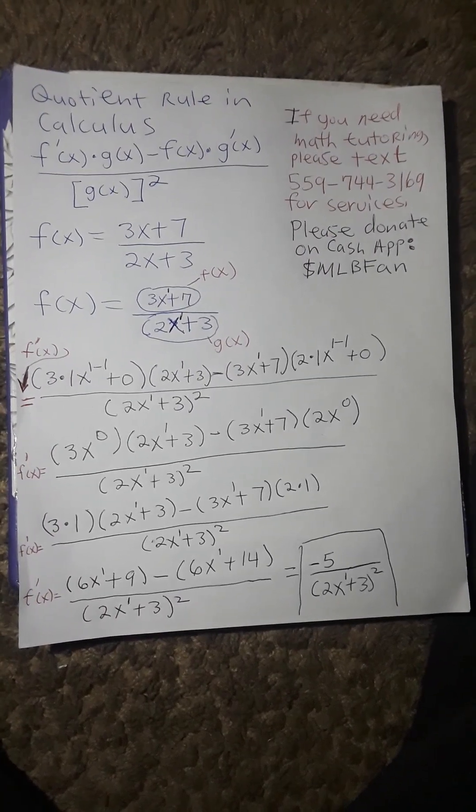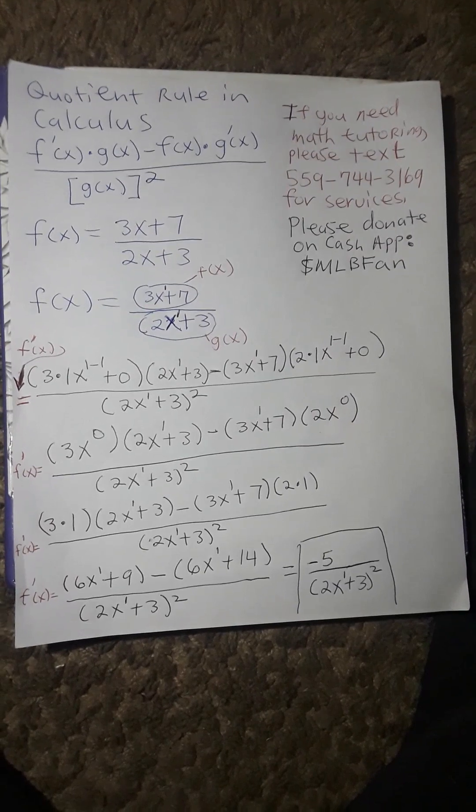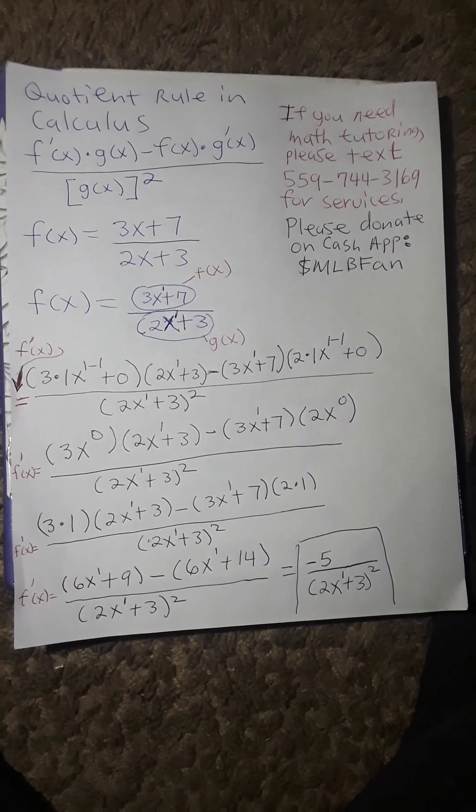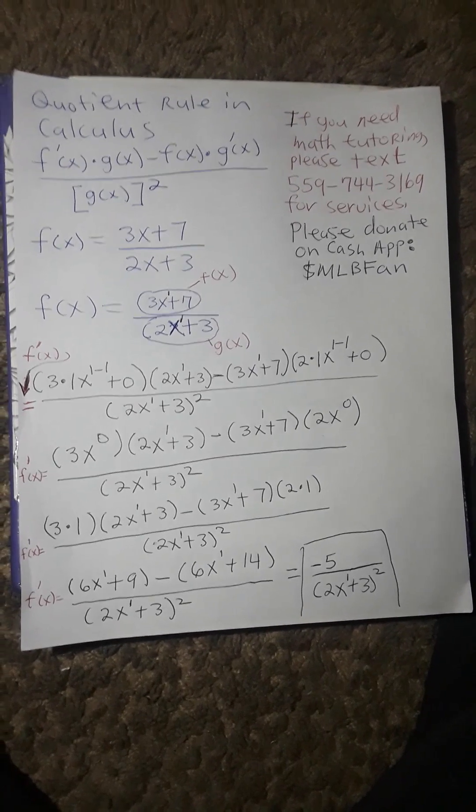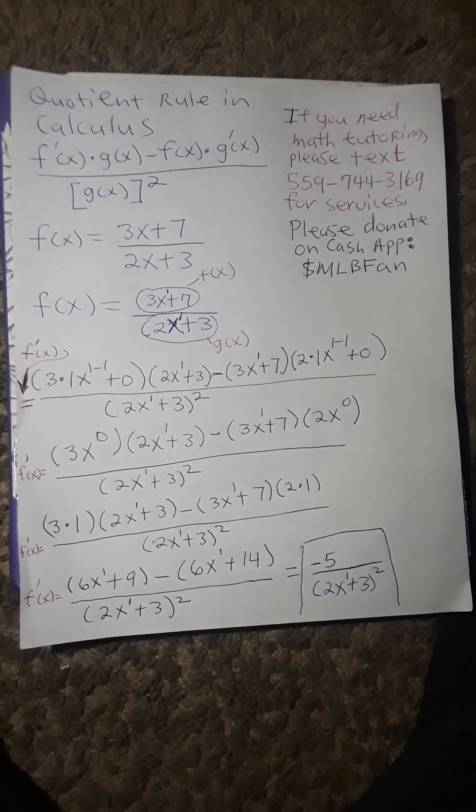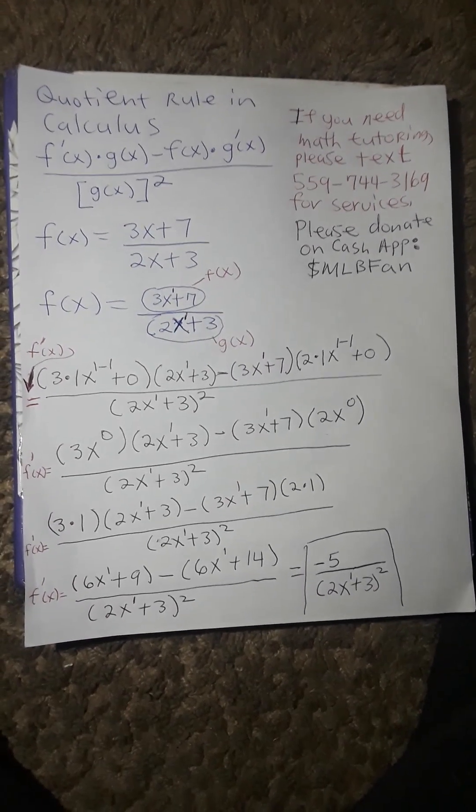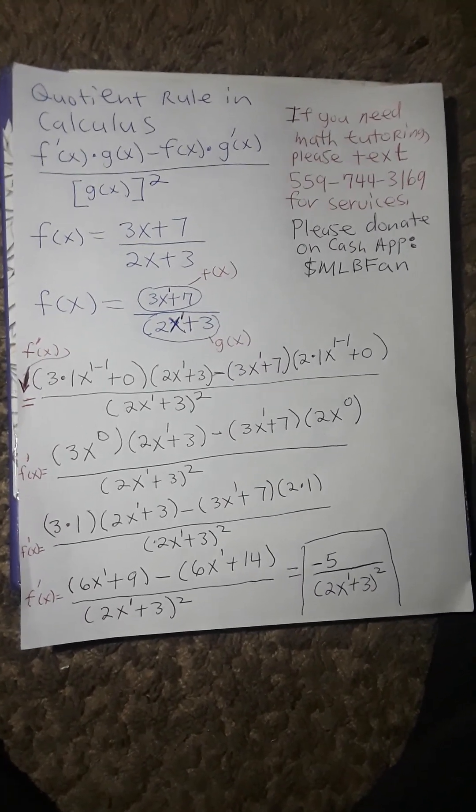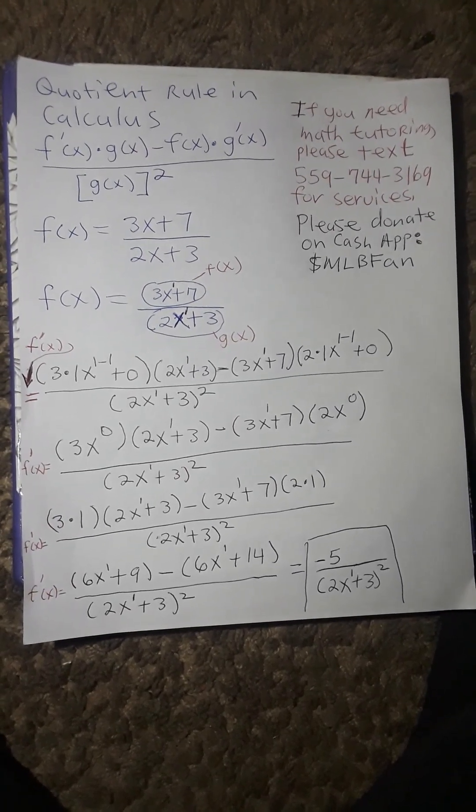And then multiply by 2x to the first power plus 3 minus f of x, 3x to the 1 plus 7 times g prime of x, which is 2 times 1 x to the 1 minus 1 plus 0, all divided by g squared or g of x squared, which is 2x to the 1 plus 3 squared.